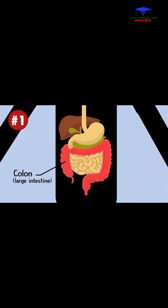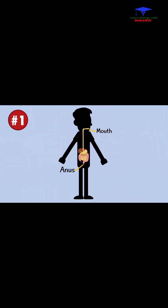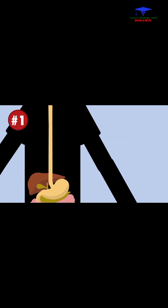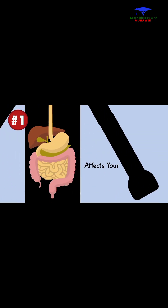Ulcerative colitis affects your colon or large intestine, but Crohn's disease can happen anywhere along your digestive tract, from start to finish. But even though your mouth can be affected, usually Crohn's affects your colon and the lower part of your small intestine.